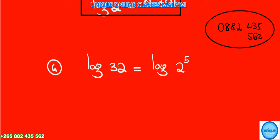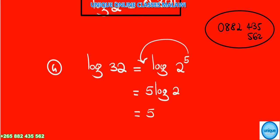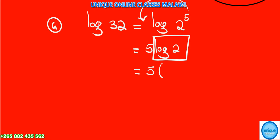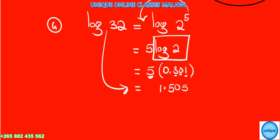We apply the power rule of logarithms, bringing the 5 down in front. So log of 32 equals 5 times log of 2. From our solution, log of 2 is 0.301, so we have 5 times 0.301.